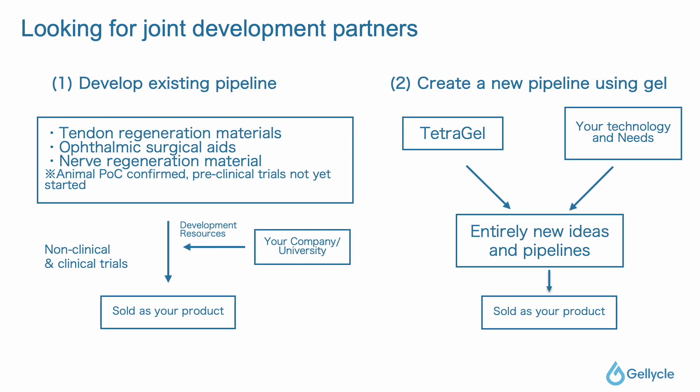The reason for our participation this time is that we are looking for a joint development partner. There are two major patterns we can consider: one is to develop existing pipelines together. For example, we have already confirmed proof of concept at the animal level for tendon regeneration materials, ophthalmic surgical aids, and nerve regeneration materials, all of which have advanced to the preclinical stage. The second is to combine our gel technology with your technology and needs to create a completely new idea and pipeline.